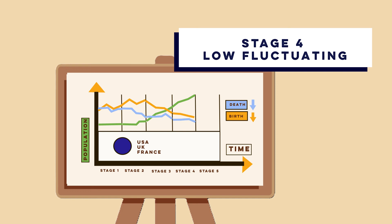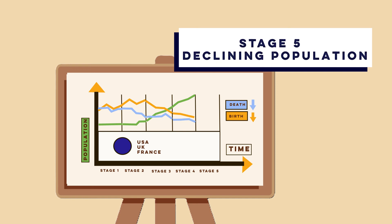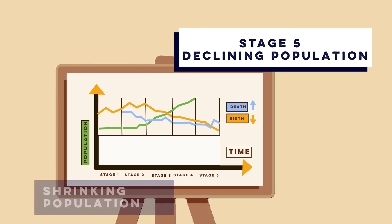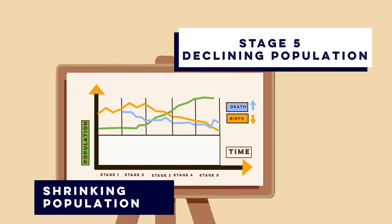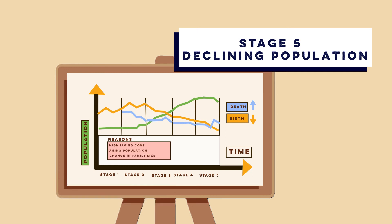Stage 5 is declining population. Birth rates for the first time fall below death rates, leading to a shrinking of population over time. This is because high living costs, an ageing population and changing attitudes towards family size all contribute to this decline. Countries like Japan and Germany are already starting to experience population decline.